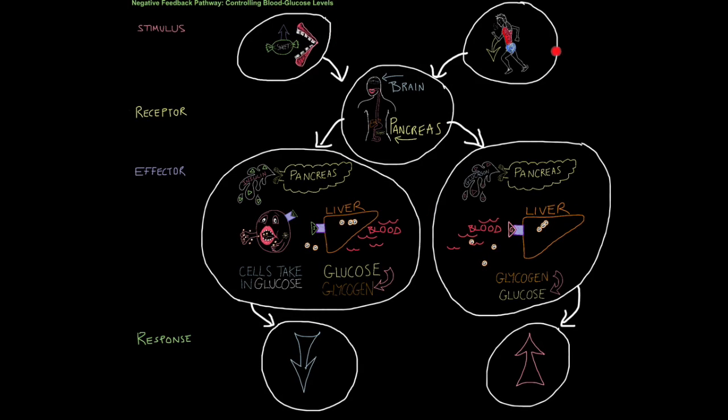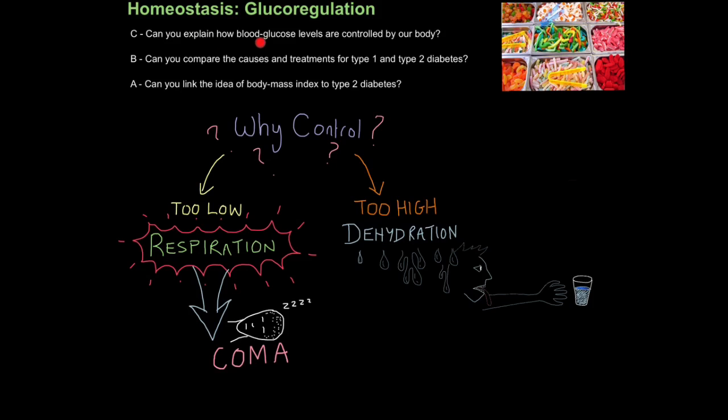Now let's look at the flip side of that. Stimulus: blood glucose levels go down, probably because we've been expending too much energy. Receptor: the pancreas detects the fall in blood glucose levels. Effector: the pancreas now produces the hormone glucagon. Glucagon binds to the liver, which converts glycogen back into glucose, which then enters our bloodstream. The response is blood glucose level rises. And once again, we have achieved negative feedback, a reversal of the initial change. And that is how you can explain how blood glucose levels are controlled by our body, or more specifically, through negative feedback.